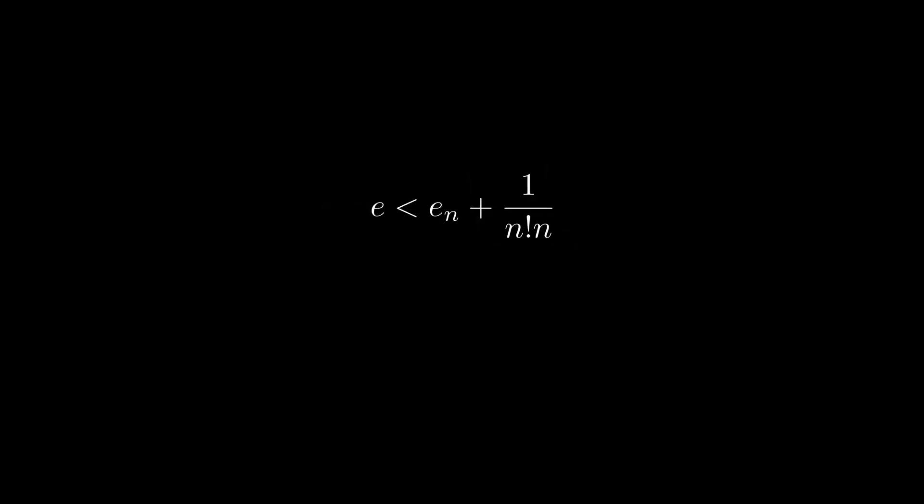Here comes the key part. Let's multiply both sides by n factorial, and recall that e is greater than E_n. Therefore, n factorial e is between a number and that number plus a small fraction. So for any n, n factorial e is not an integer.